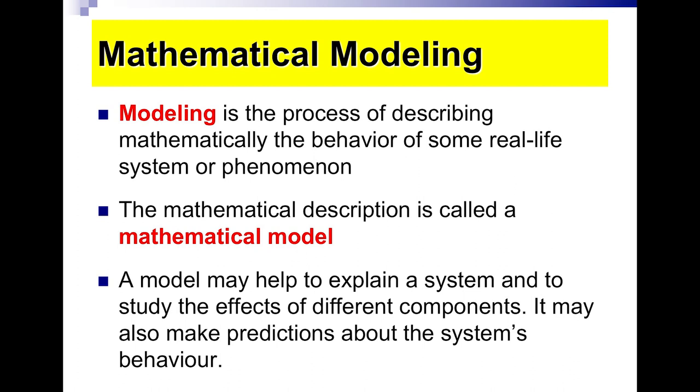Mathematical modeling refers to the process of describing mathematically the behavior of some real-life system or phenomenon. The mathematical description is called a mathematical model. A model may help to explain a system and study the effects of different components. It may also make predictions about the system's behavior.